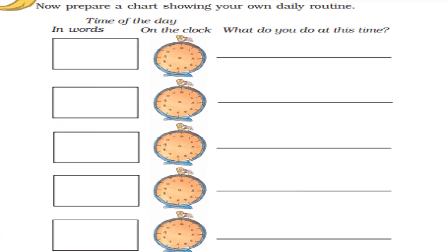Children, now prepare a chart showing your own daily routine. Write the time of the day in words, draw it on the clock, and also mention what you do at that time.